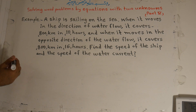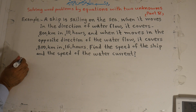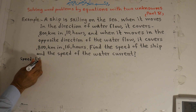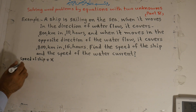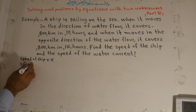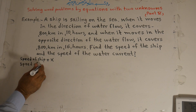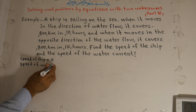Now we choose names for the unknowns. Speed of ship is equal to x. Speed of water is equal to y.